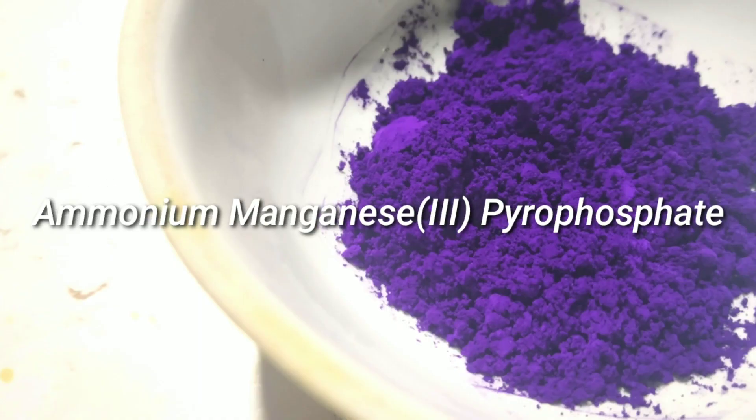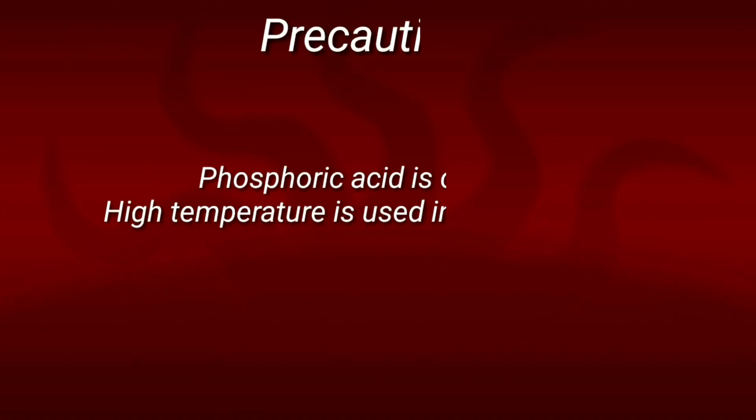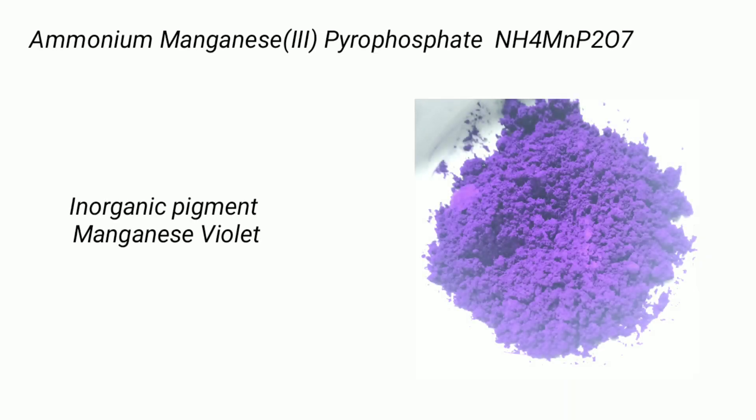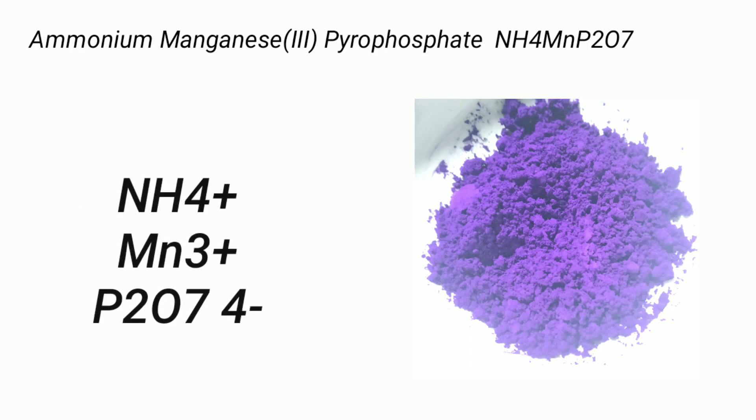Hello friends, in this video we prepare an interesting inorganic pigment molecule called ammonium manganese(III) pyrophosphate. This inorganic pigment is better known as manganese violet. It has a vibrant purple color and consists of three separate ions: the ammonium ion, manganese in +3 oxidation state, and the pyrophosphate ion.